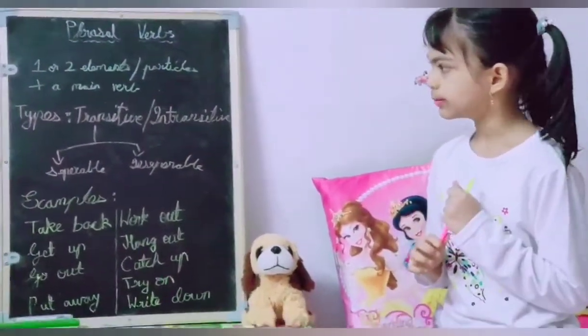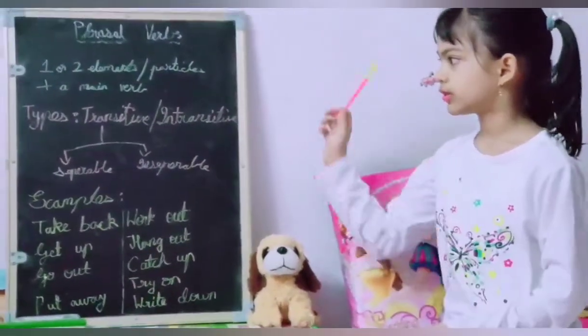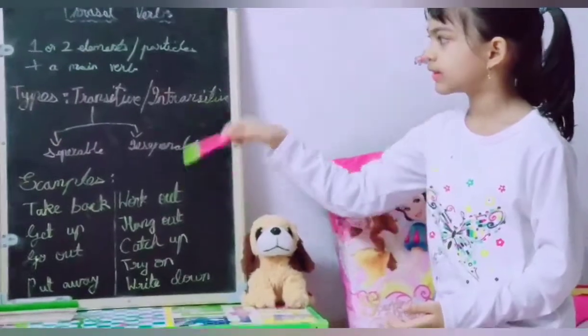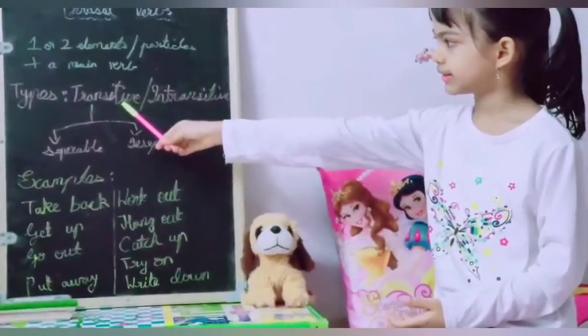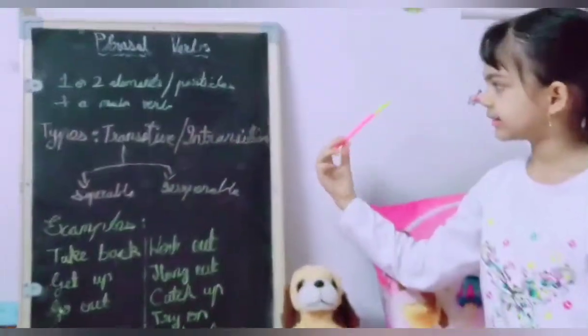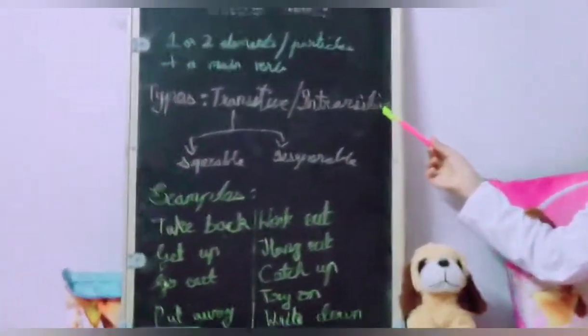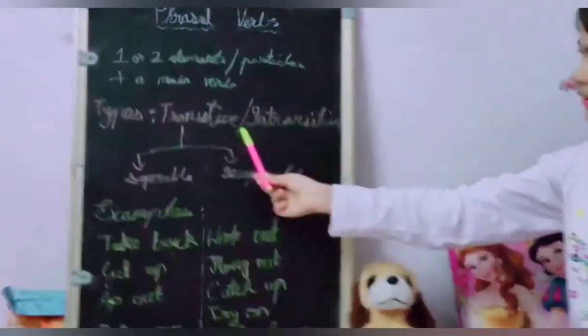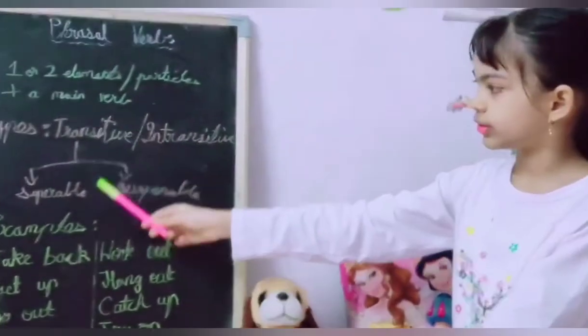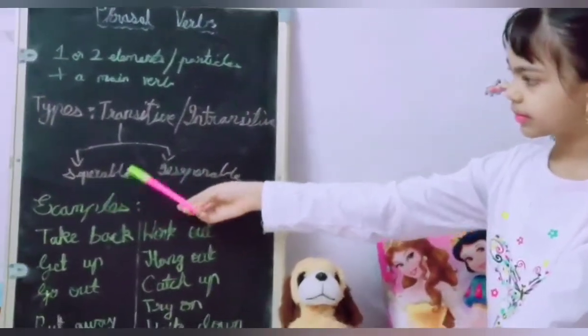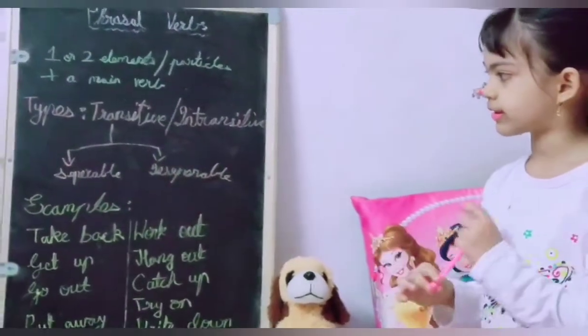Phrasal verbs are of two types: transitive and intransitive. In transitive we have two types: separable and inseparable.